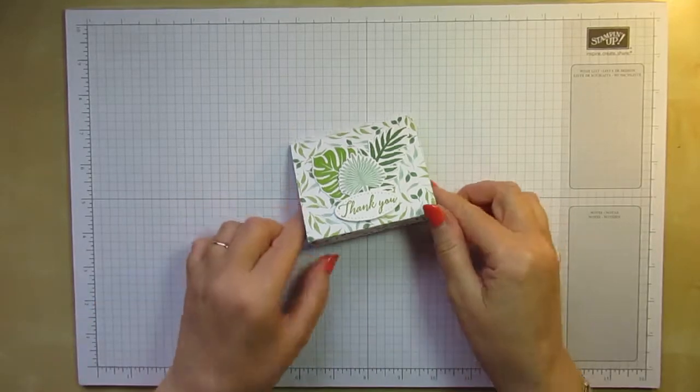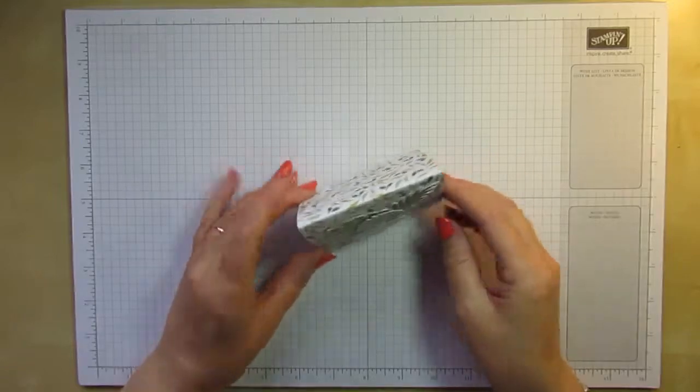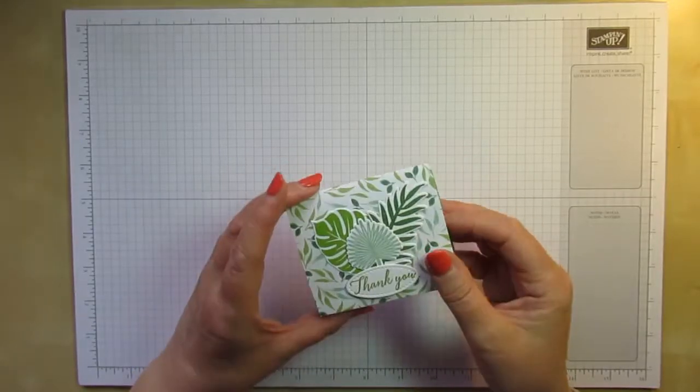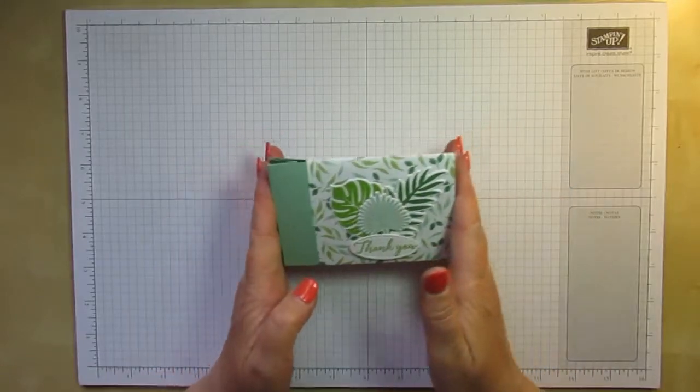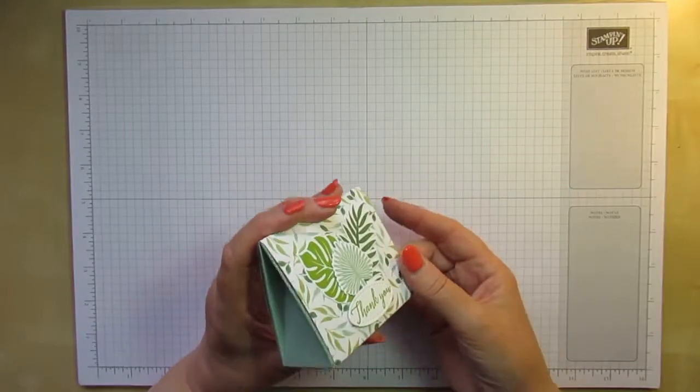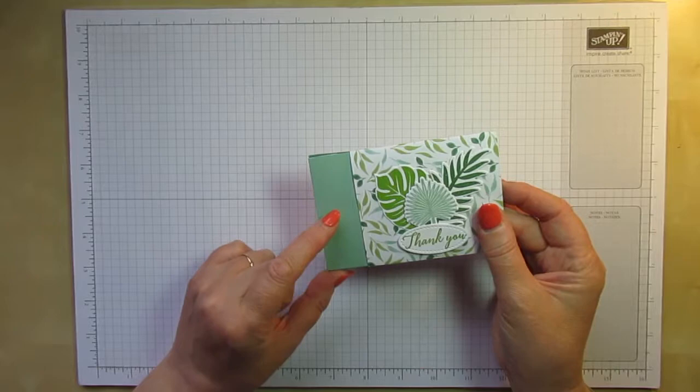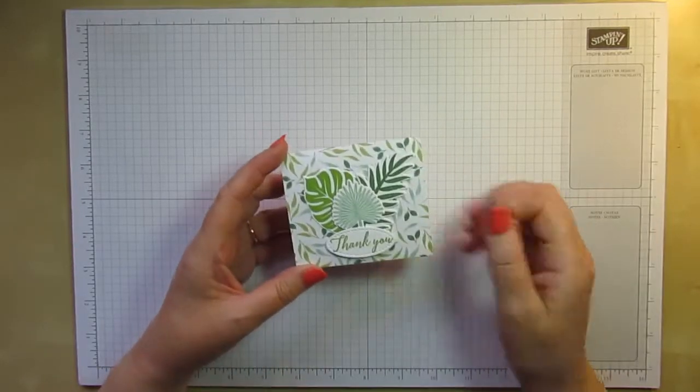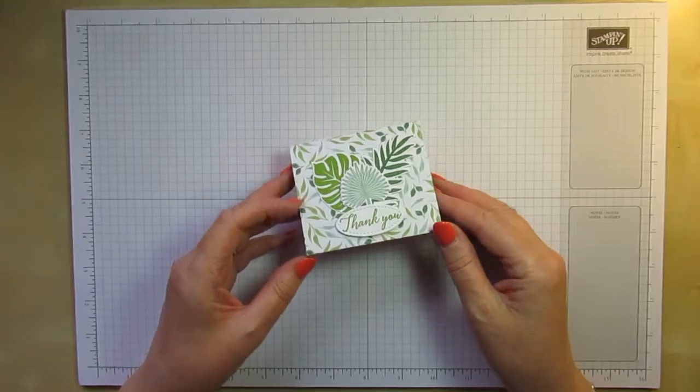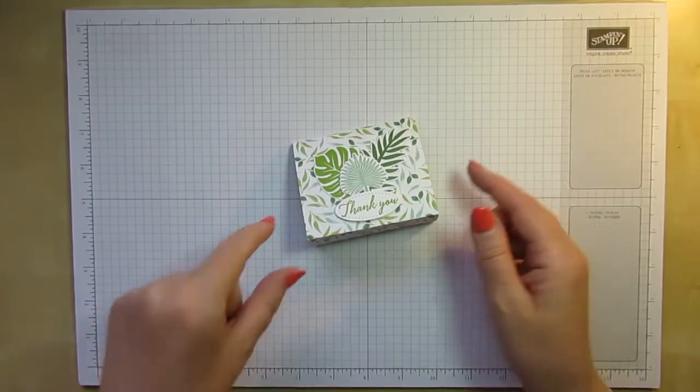Today's project is this little tent gift box here. It's a cardstock gift box inside a designer series paper sleeve, and this one I made using mint macaron cardstock with the Garden Lane DSP which has most of our greens in it.